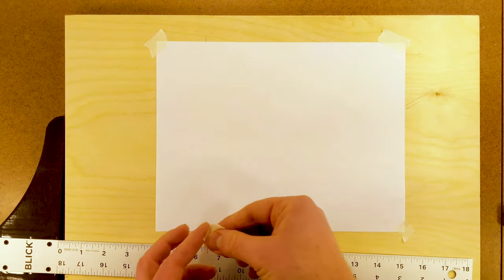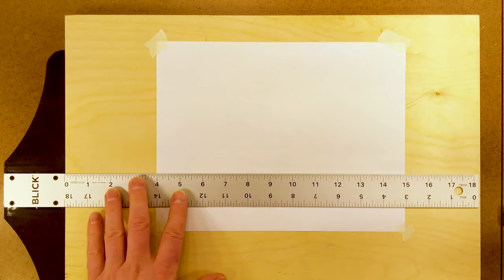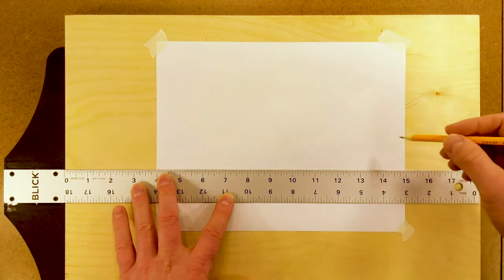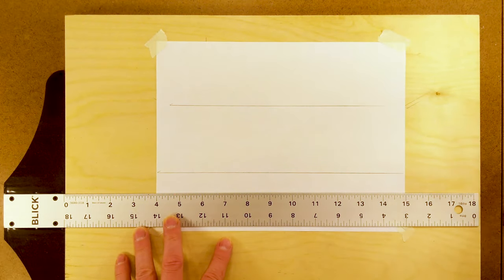This will keep our drawing paper in place while we use the t-square to draw multiple parallel lines. Now we can take our pencil and we can quickly draw parallel lines by sliding the t-square along the edge of the page.